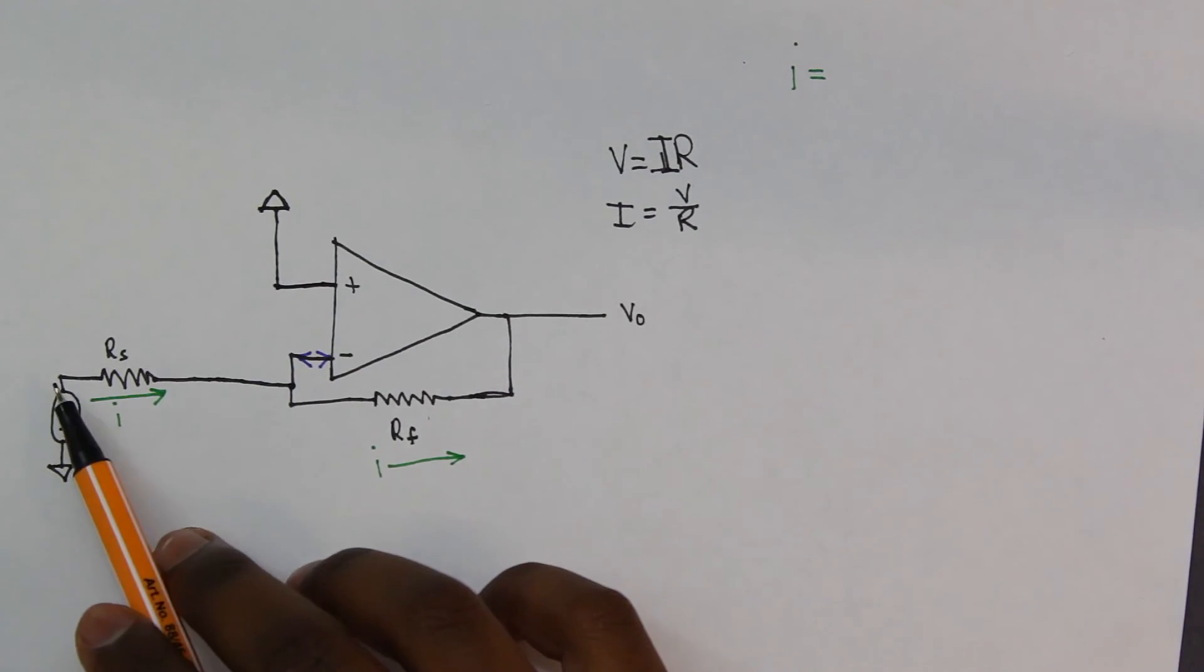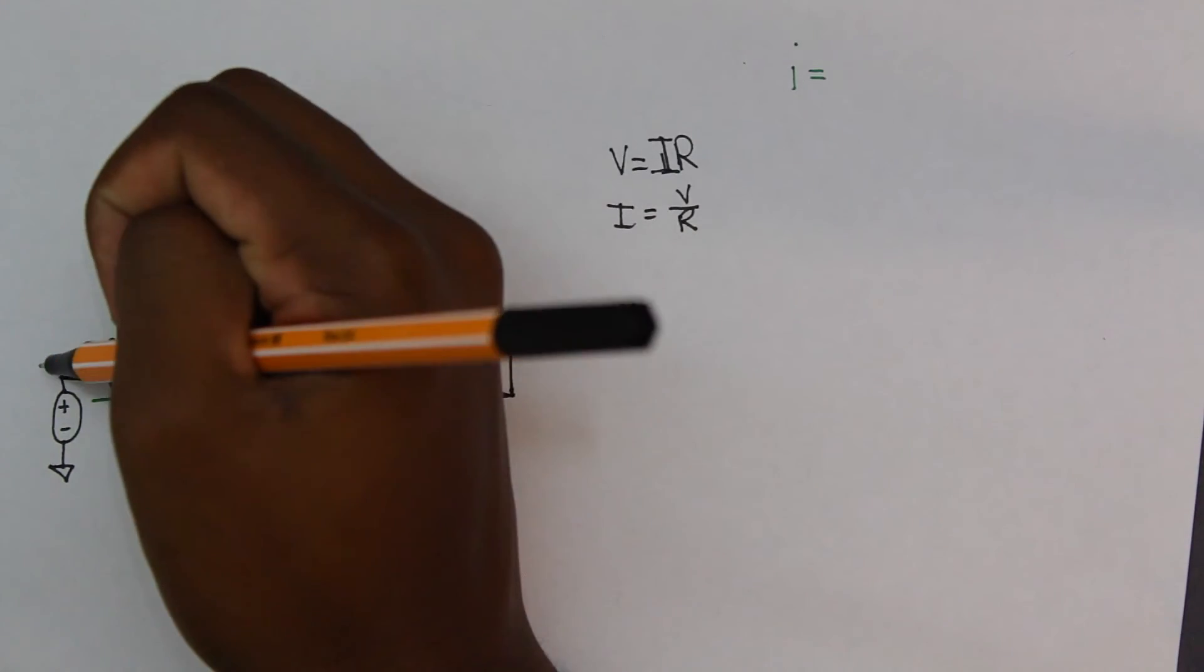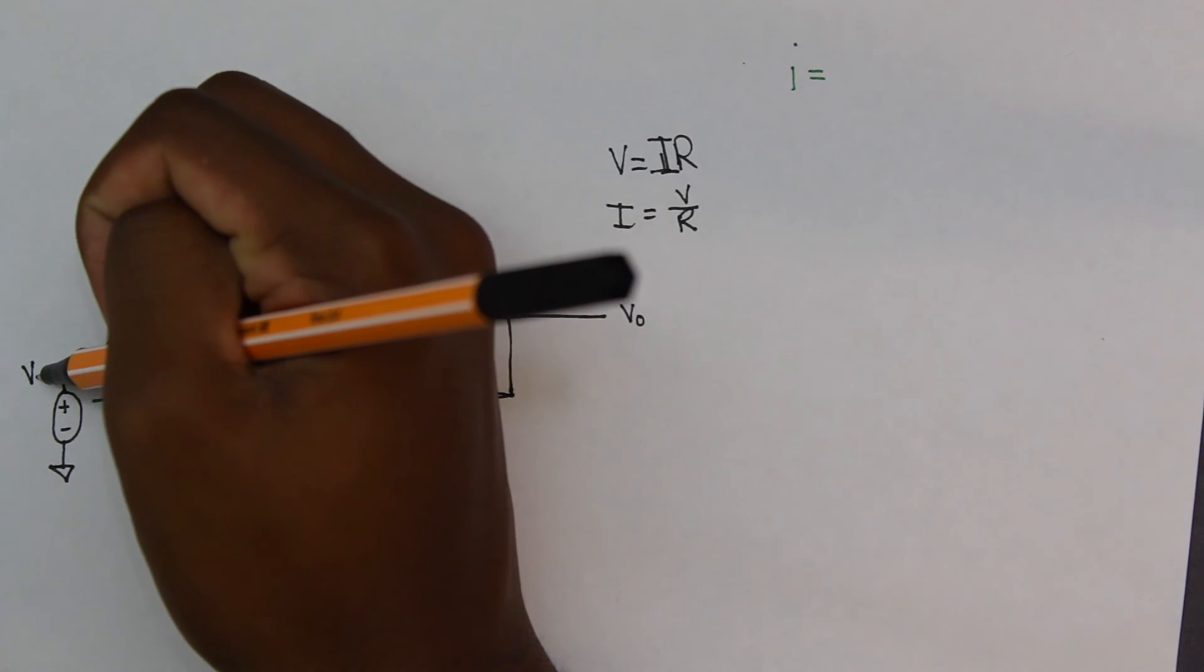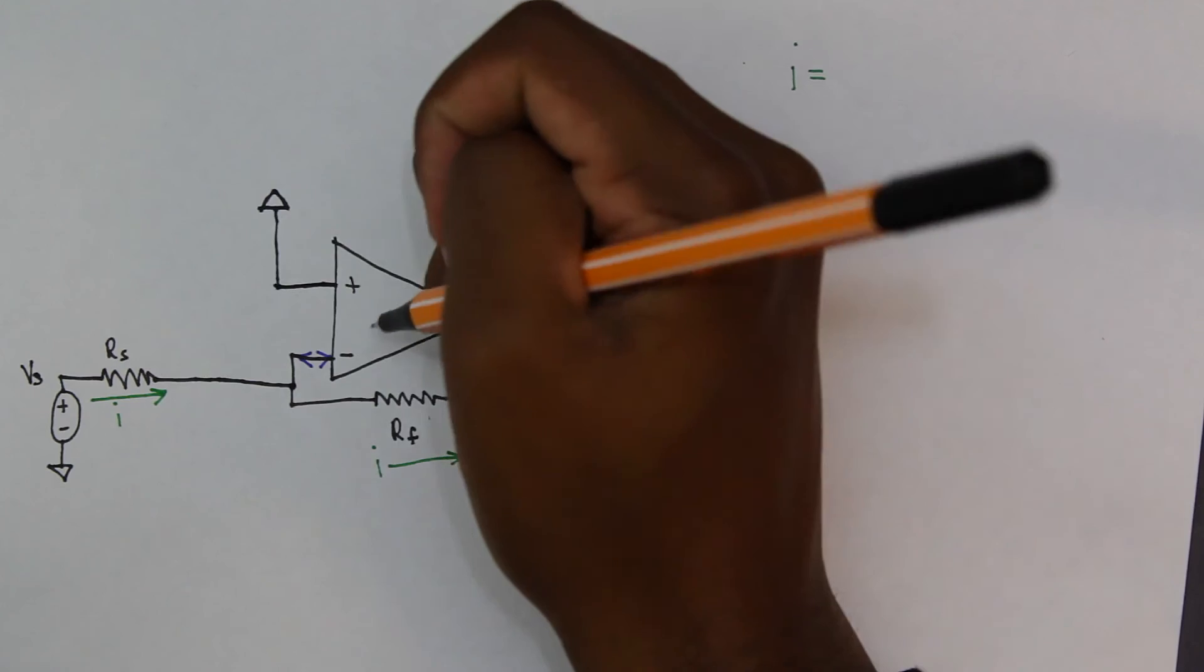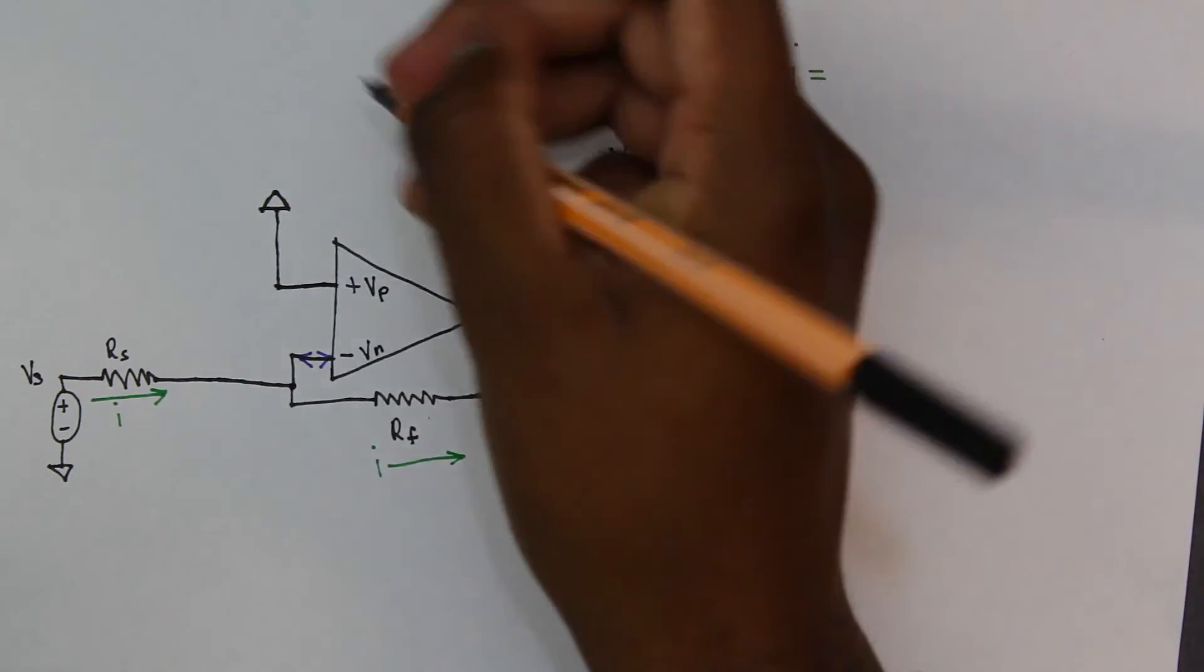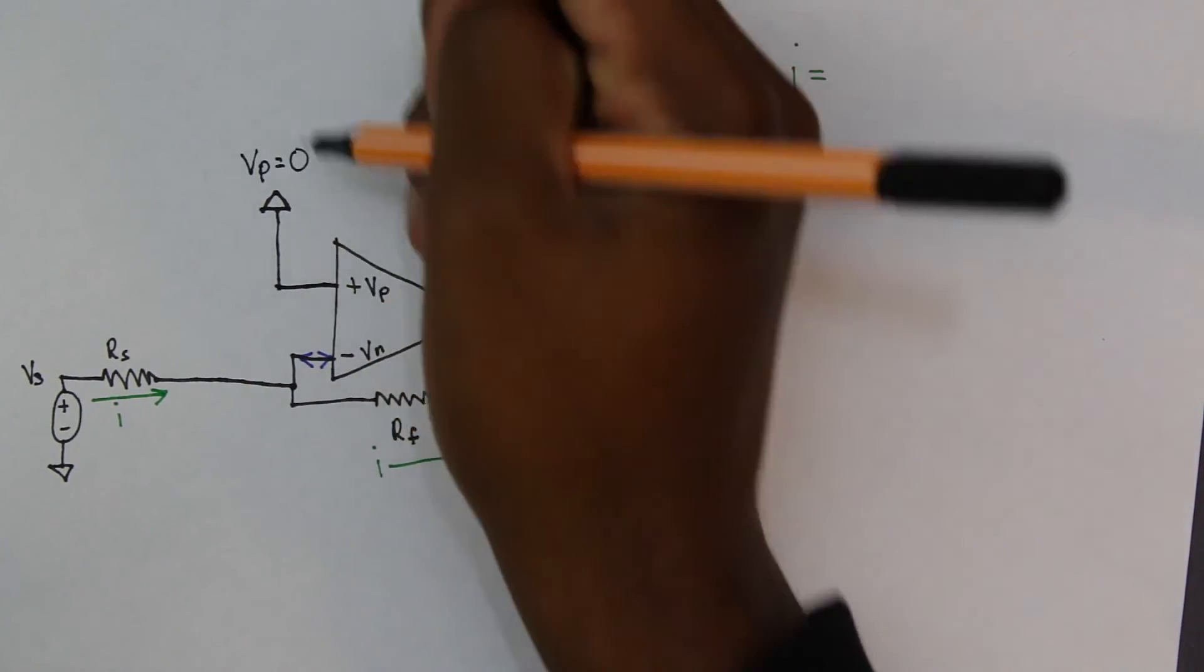But before we do this, let's label a little bit more things on our op-amp. Well, first off, we know that Vs, let's label Vs, that's our input signal. And let's label Vn, that's our inverting input on our op-amp. Let's also label Vp. Now, Vp is grounded, so we know Vp is equal to zero.